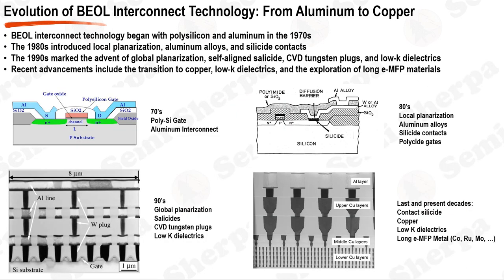The history of back-end-of-line, BEOL, interconnect technology is a fascinating journey of innovation and adaptation. The story begins in the 1970s, when polysilicon and aluminum were the primary materials used for interconnects. As we moved into the 1980s, the technology evolved with the introduction of local planarization, aluminum alloys, and silicide contacts. Local planarization improved wafer surface flatness for more precise patterning, while aluminum alloys improved reliability and silicide contacts reduced contact resistance.